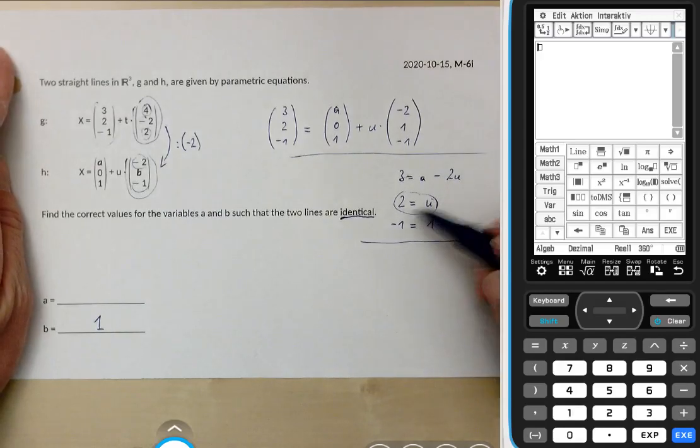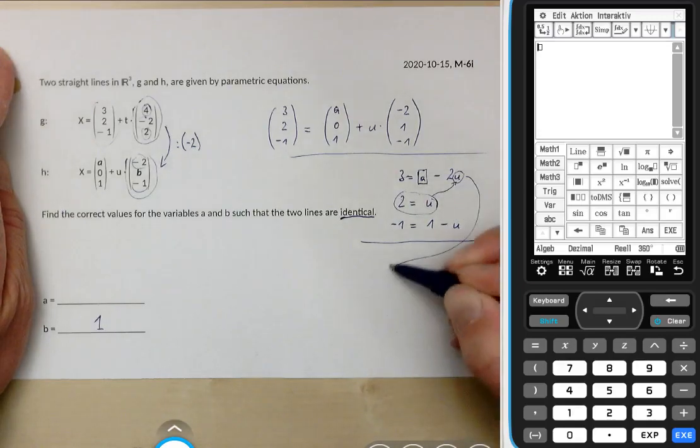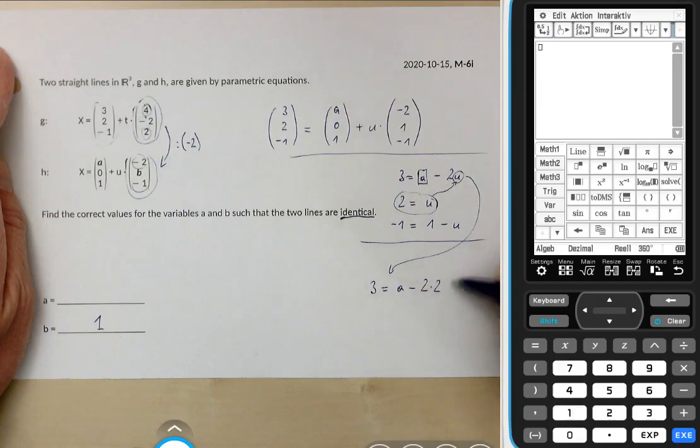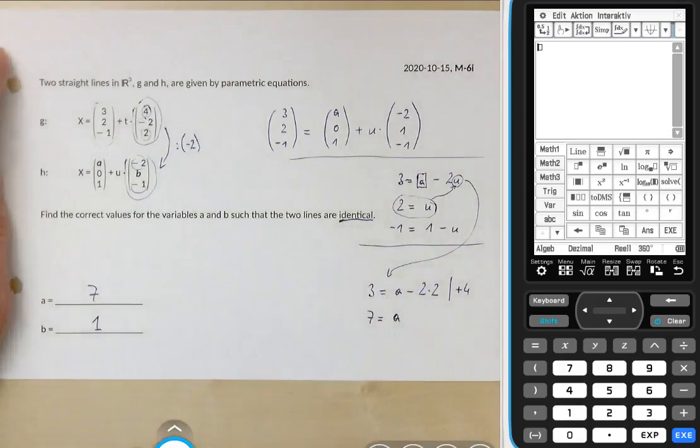If you look at the second equation it's so simple that we don't need our calculator for that. It's quite obvious. u equals 2 but we want to know a so we have to substitute the 2 instead of the u in the first equation and then we will get 3 equals a minus 2 times 2. That's minus 4 so we can use plus 4 to have 7 equals a and that's the solution so a equals 7 in this case.